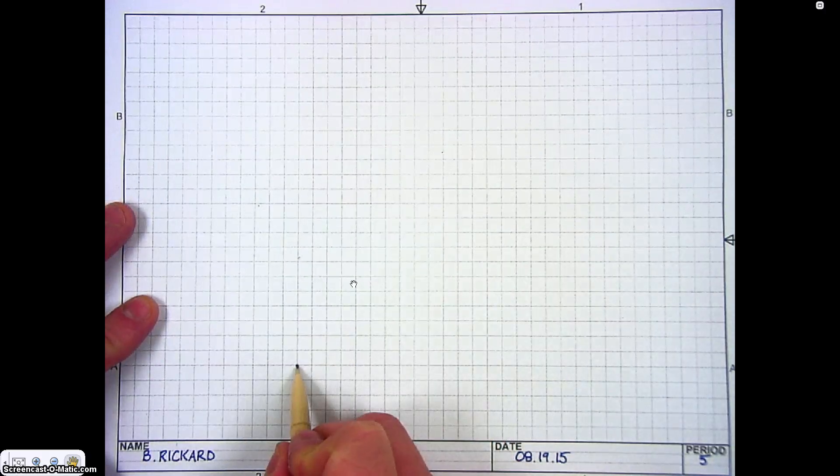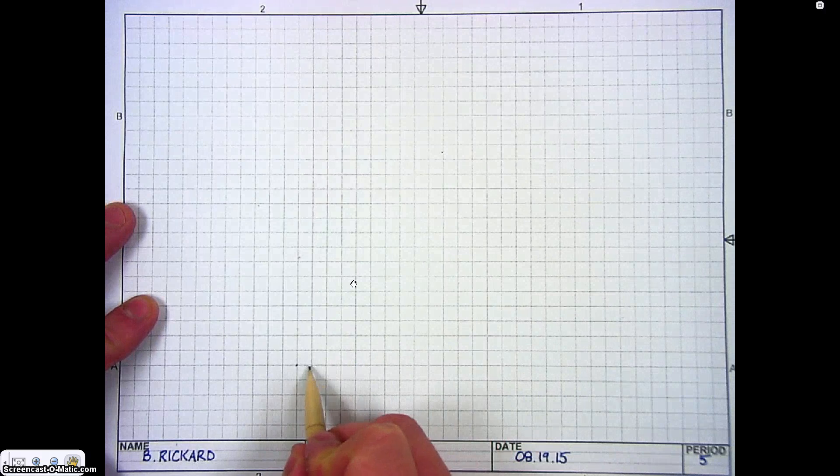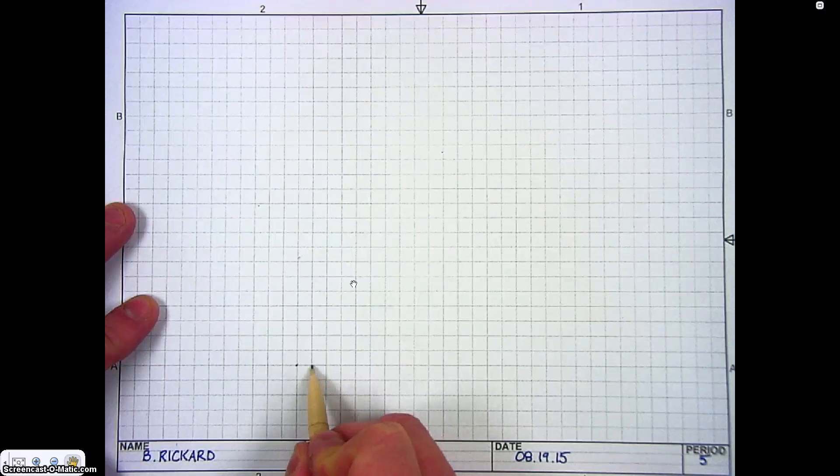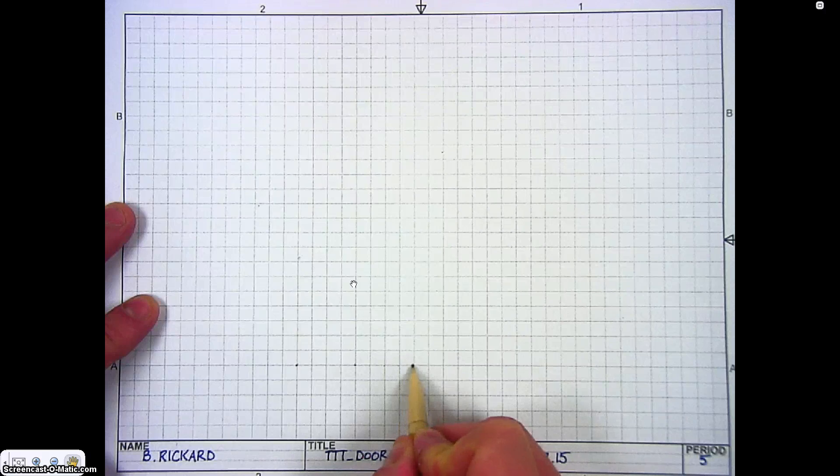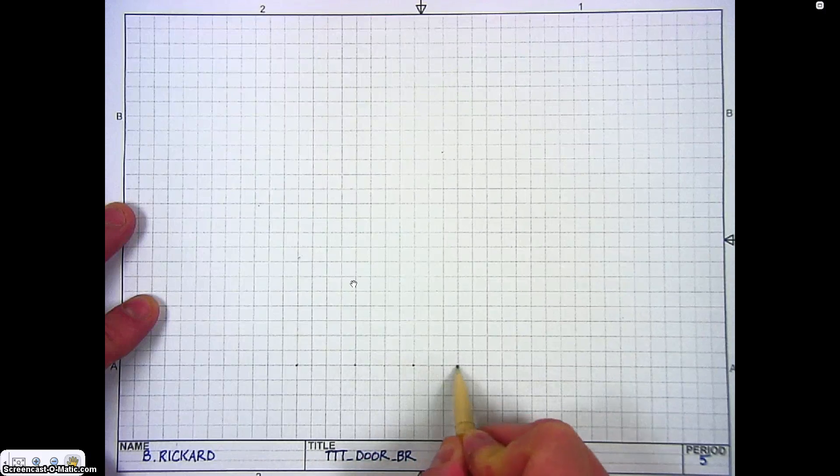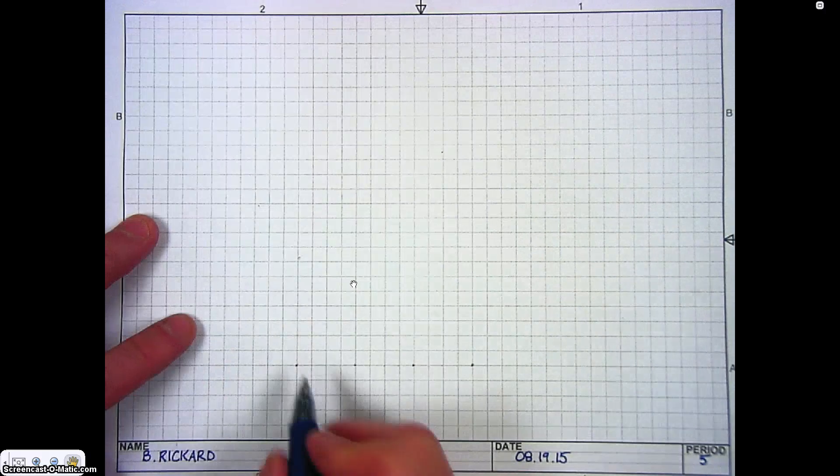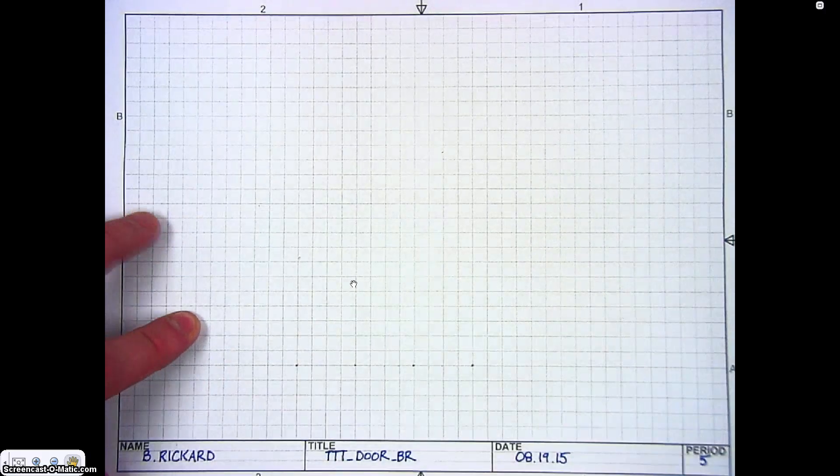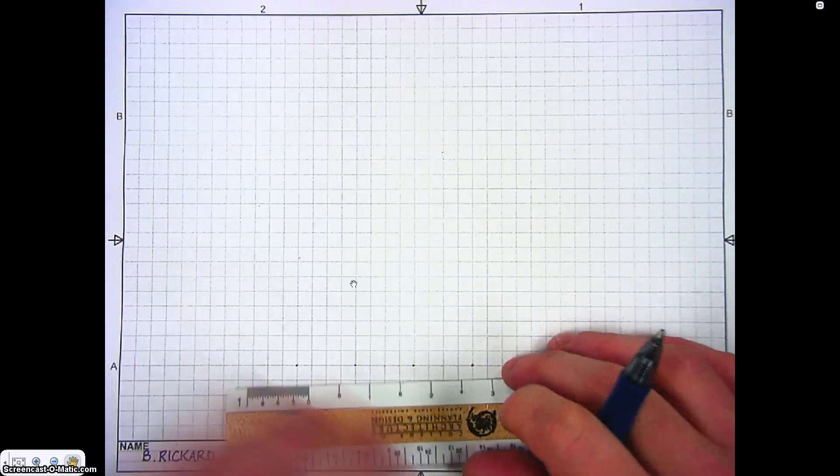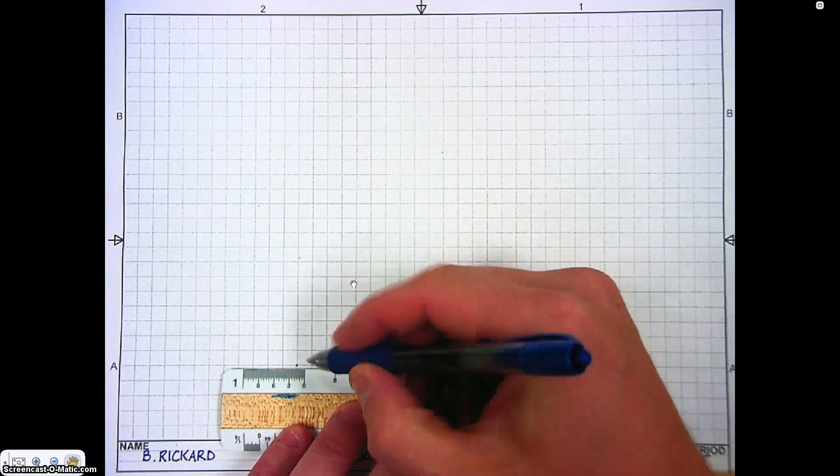Our door is three inches, so I'm going to count over by fours. One, two, three, four—that's one inch. One, two, three, four—that's two inches. One, two, three, four—that's three inches. This is the width dimension for that door. I'll go ahead and darken that line in.